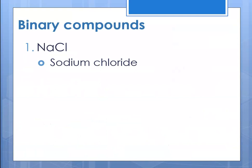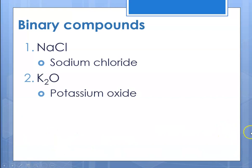For binary compounds, my first example is NaCl. Na is sodium and Cl is chlorine, so this would be sodium chloride. My second example is K₂O. K is potassium — name the cation — O is oxygen, so this would be oxide: potassium oxide. Notice there are no prefixes.